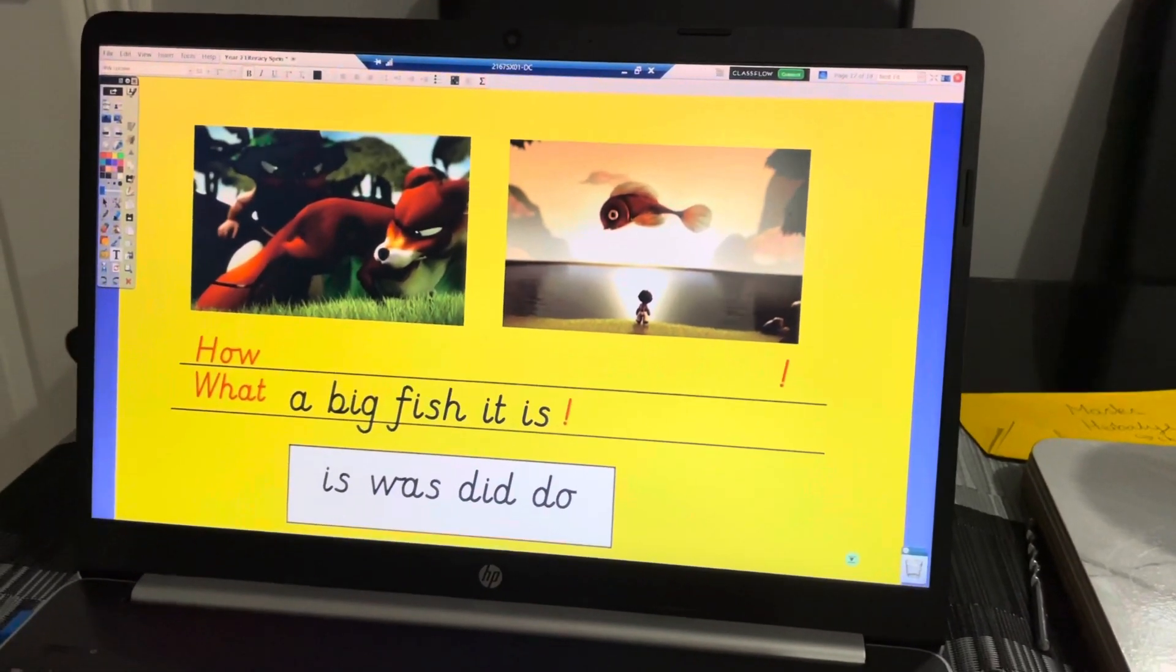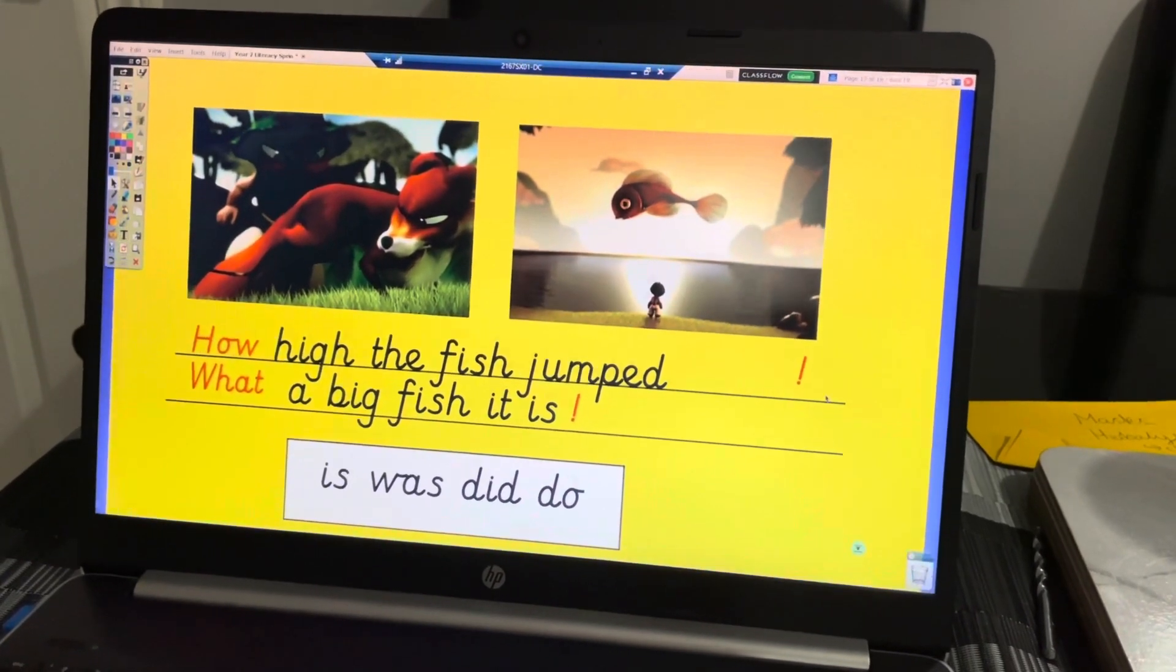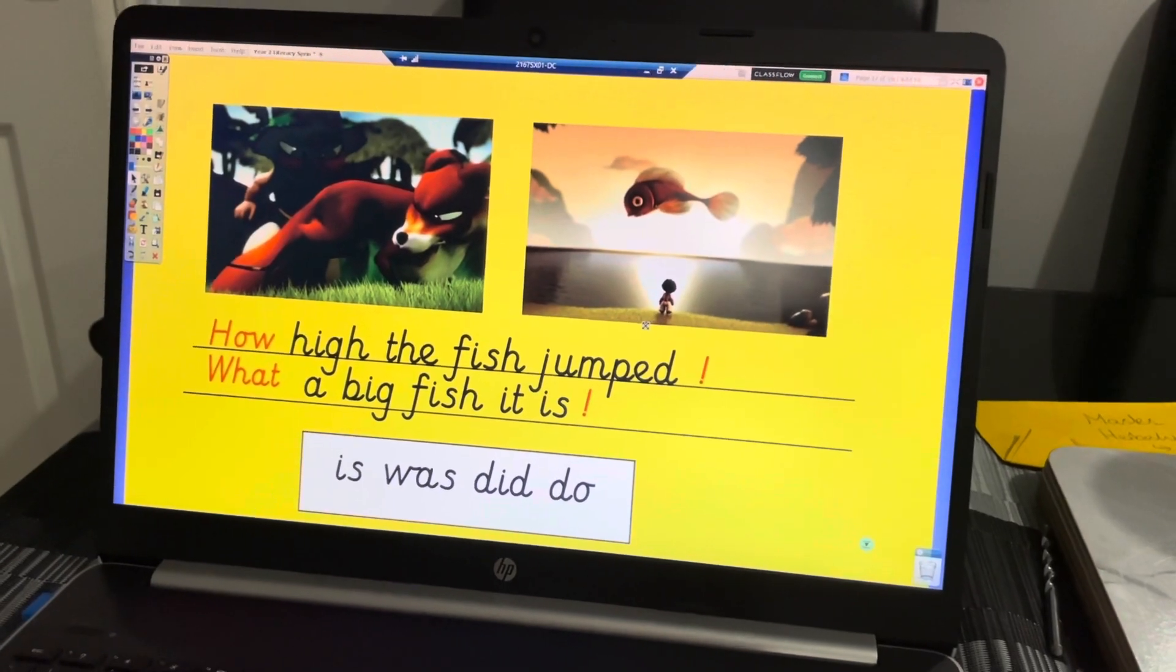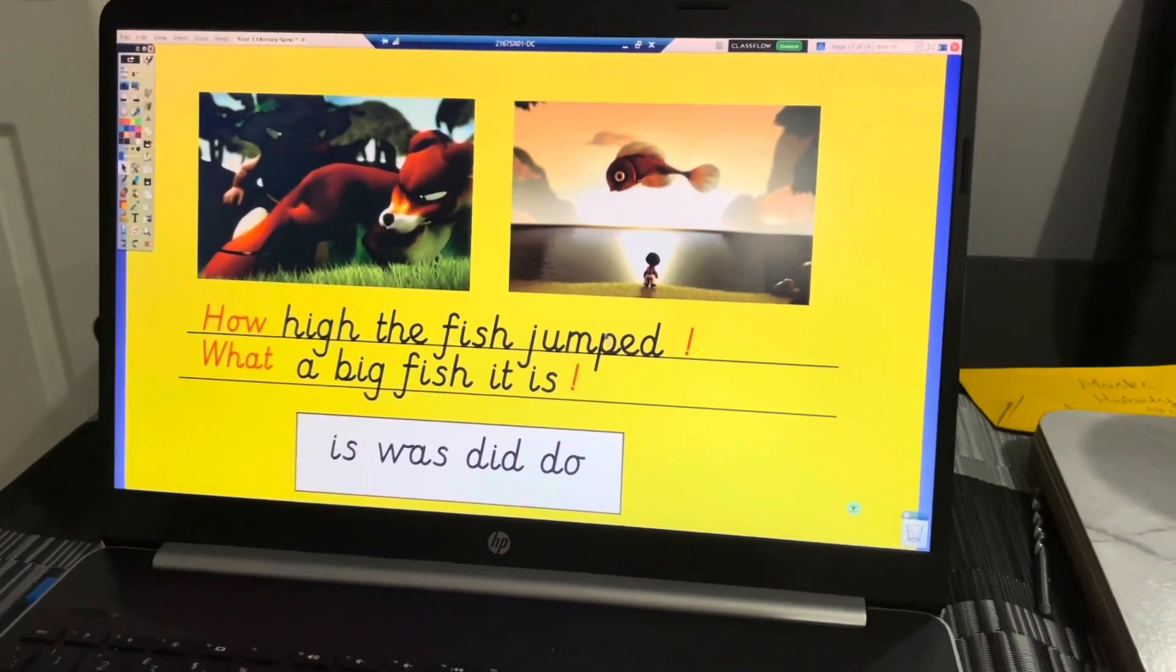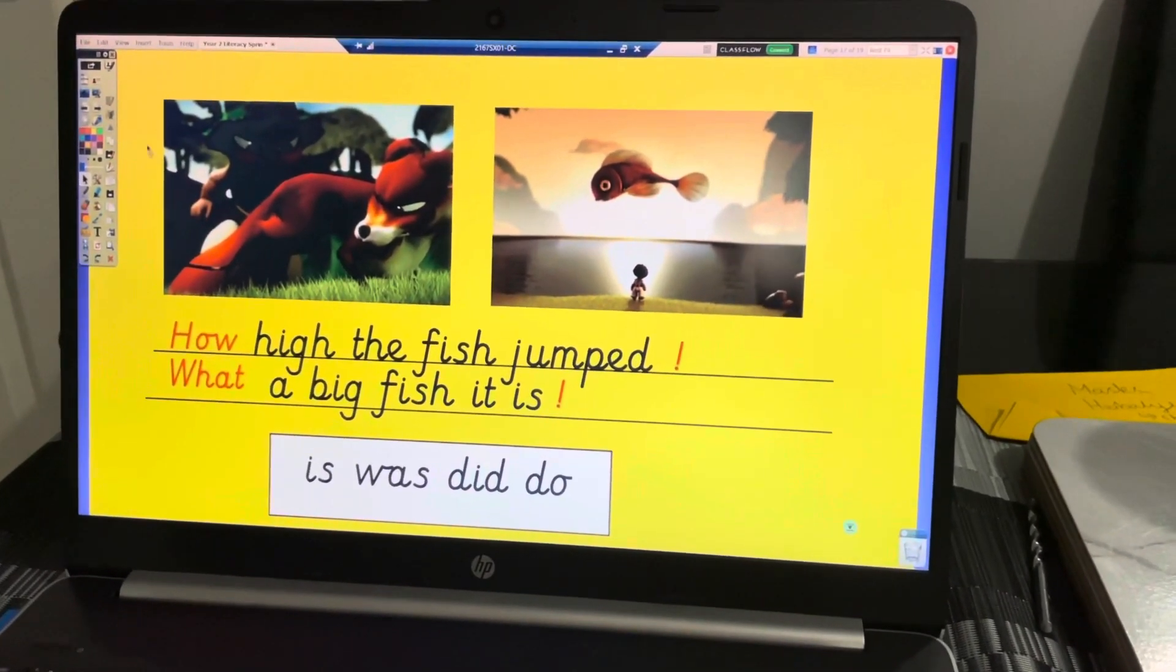'How high the fish jumped!' I'm not saying 'how high did the fish jump?' because that would be a question. Has anybody spotted the verb in this sentence? What could the fish do? He could jump. So the verb is 'jumped'.